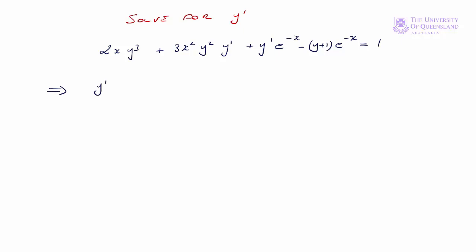So we'll have y prime times (3x squared y squared plus e to the minus x) in brackets. We can subtract 2x times y cubed and add (y+1)e to the minus x to both sides. That's equal to then 1 plus (y+1)e to the minus x minus 2xy cubed. And then we divide through by (3x squared y squared plus e to the minus x).